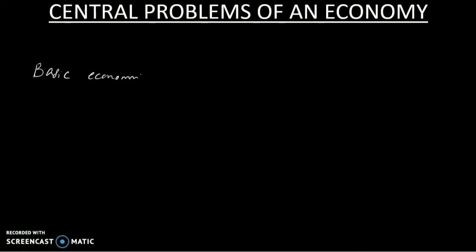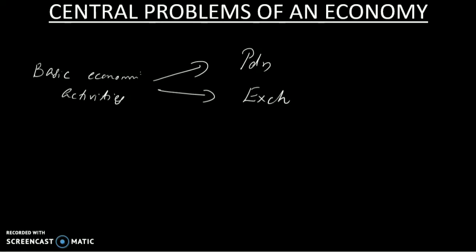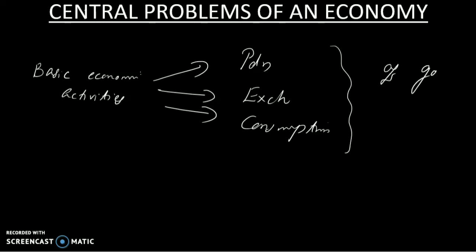What are the basic economic activities of an economy? There are three basic economic activities. The first one is production. The second one is exchange. And the third one is consumption. So the basic economic activities are production, exchange, and consumption of goods and services.